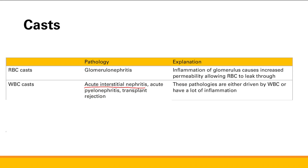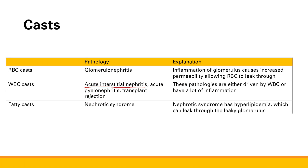White blood cell casts: acute interstitial nephritis, acute pyelonephritis, transplant rejection. Next is fatty casts — these are seen in nephrotic syndrome. Nephrotic syndrome has a problem with very leaky podocyte processes; the whole glomerulus is extra leaky. We also have hyperlipidemia in nephrotic syndrome, so all those lipids in your blood can leak through the leaky glomerulus, and you might see fatty casts. Fatty casts tell you that you have nephrotic syndrome.